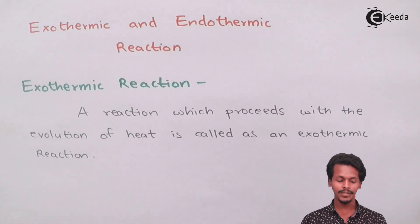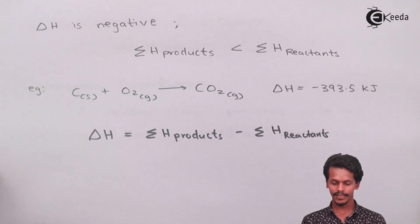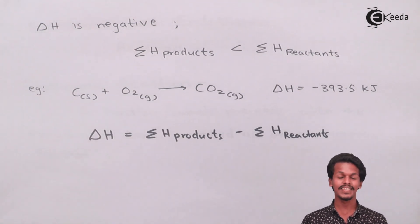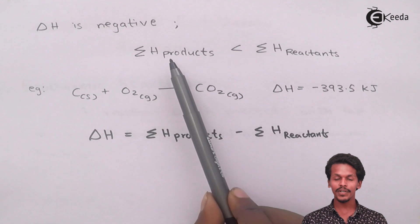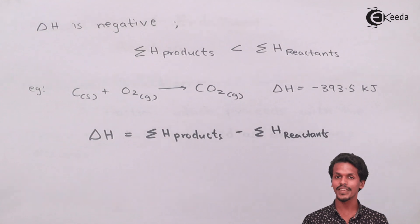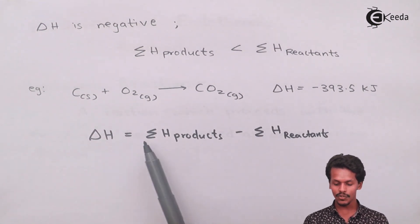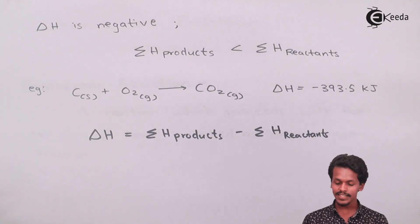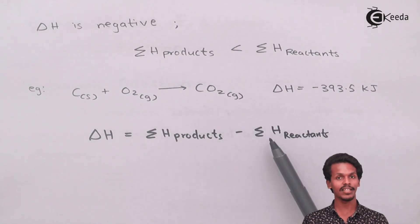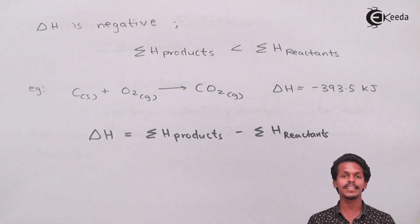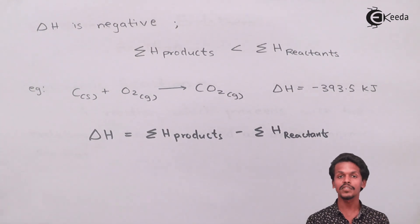Let me showcase this with an example. In an exothermic reaction, delta H is found to be negative. This is because the sum of H of products is smaller than that of the sum of H of reactants. Using the formula delta H = sum of H of products minus sum of H of reactants, if H of products is smaller than H of reactants, delta H will be negative, clearly indicating that energy is being lost during this process.